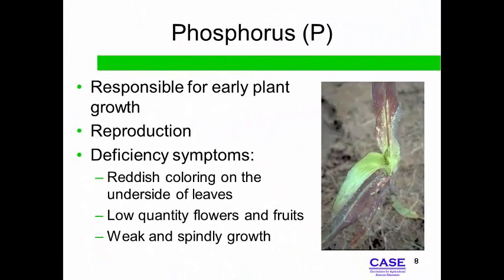Phosphorus, or P, influences root health and growing seedlings. If ample phosphorus is available to young plants, they will develop strong root systems that are important for their survival. Later in the life of the plant, phosphorus will again play a major role in reproductive health.